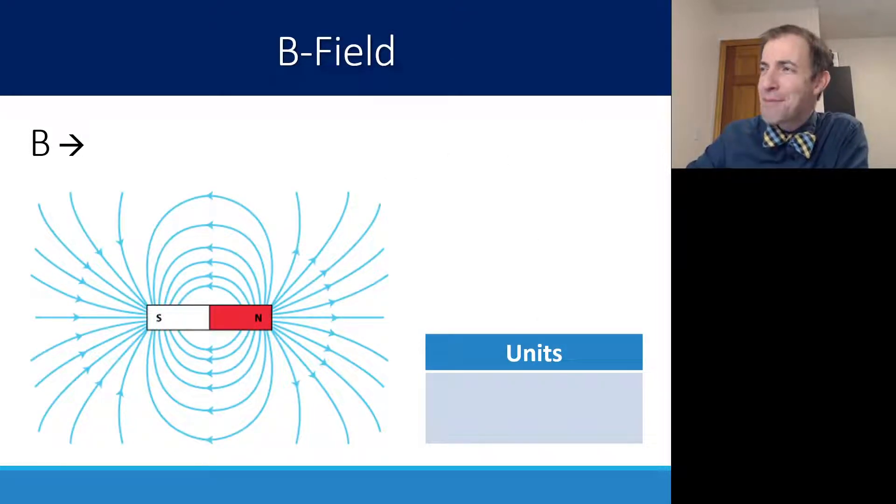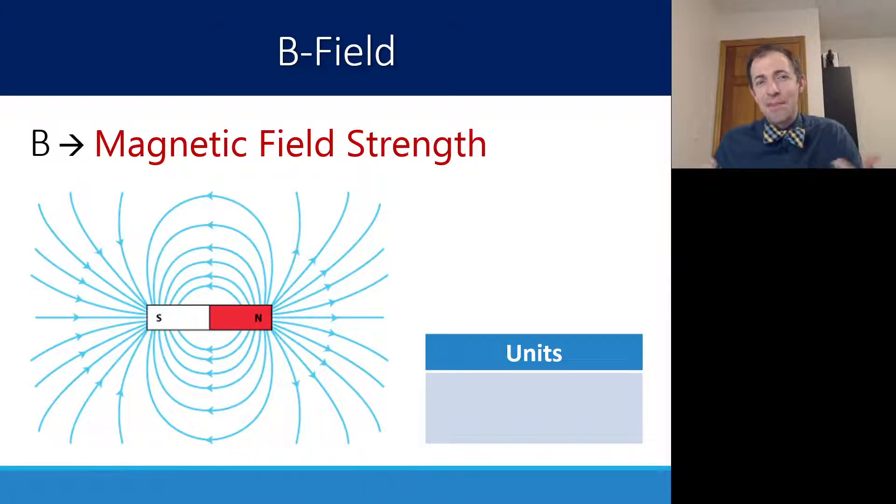We call this magnetic field, we actually give it a symbol, a capital B. Sometimes we call it the B field. B in this case stands for magnetic field strength. This is analogous to when we talked about electric field strength or gravitational field strength.